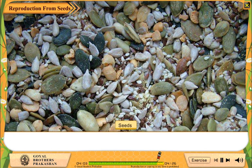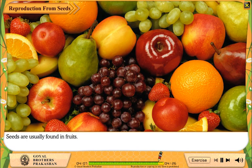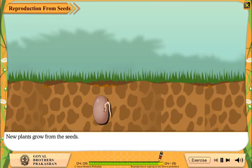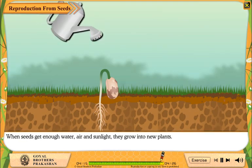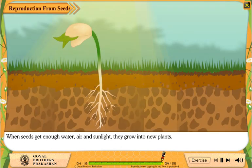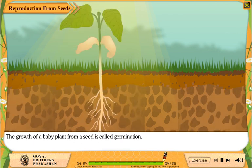Reproduction from Seeds. Seeds are usually found in fruits. New plants grow from the seeds. When seeds get enough water, air and sunlight, they grow into new plants. The growth of a baby plant from a seed is called germination.